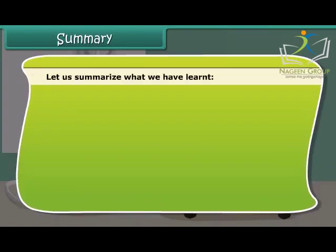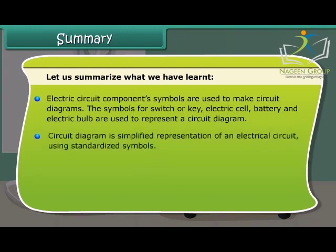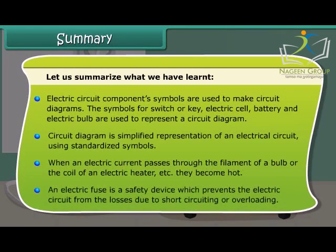Let us summarize what we have learned. Electric circuit component symbols are used to make circuit diagrams. The symbols for switch or key, electric cell, battery, and electric bulb are used to represent a circuit diagram. A circuit diagram is a simplified representation of an electrical circuit using standardized symbols. When an electric current passes through the filament of a bulb or the coil of an electrical heater, they become hot. An electric fuse is a safety device which prevents the electric circuit from losses due to short circuiting or overloading.